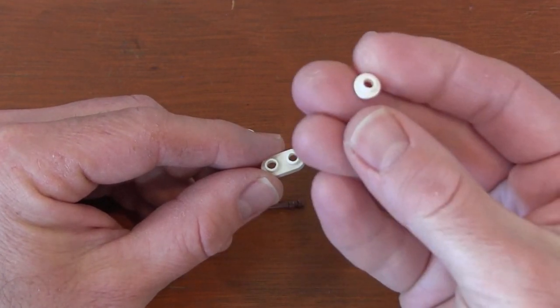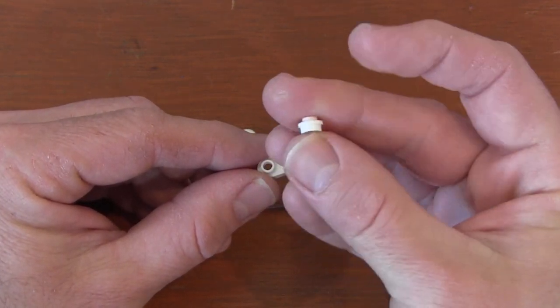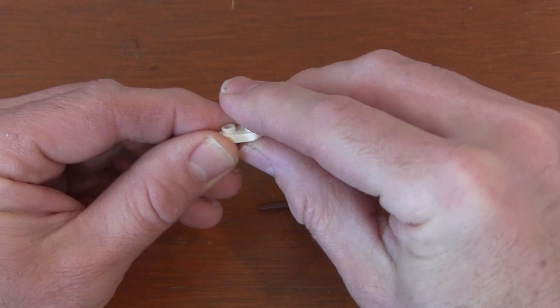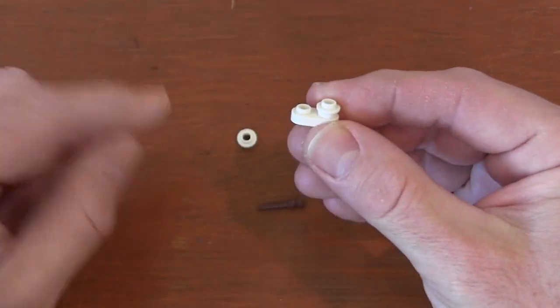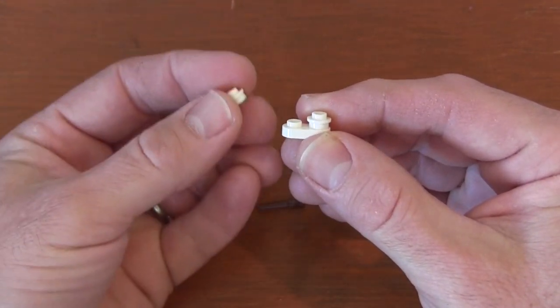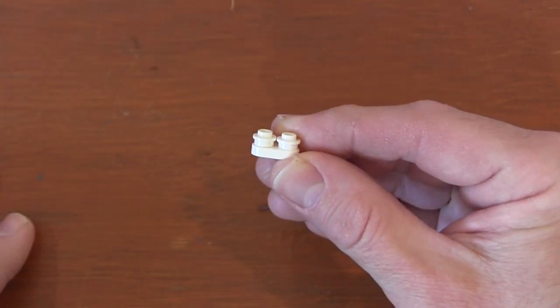Next thing we're going to do is grab two 1x1 plates with hull. Now only one really has to have the hull, but I just did two to make it simpler. So we're going to put those two plates on the top of my 1x2 plate like this.